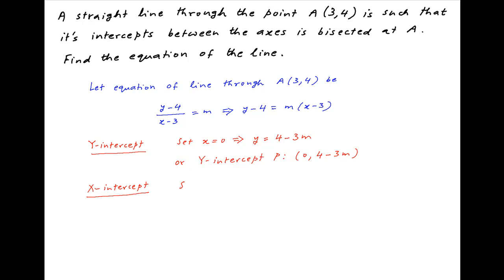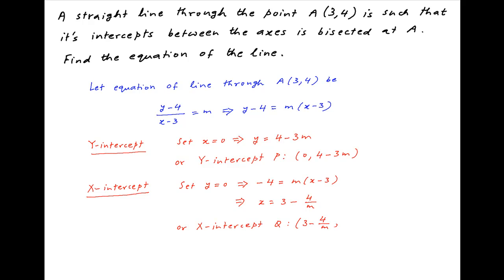Similarly, the x-intercept can be obtained by setting y equal to 0 in the equation of the line, which means that minus 4 is equal to m times x minus 3, and therefore the value of x is equal to 3 minus 4 upon m. Therefore the coordinates of the x-intercept are (3 minus 4 upon m, 0). Let's denote this point as Q.